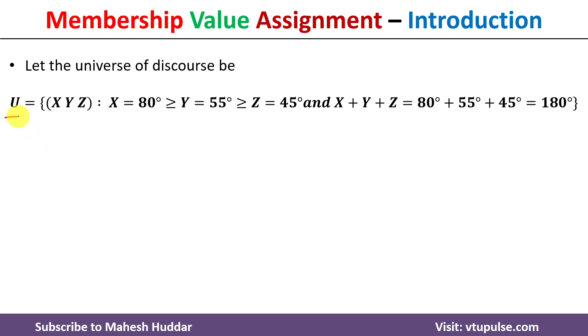The universe of discourse U contains three elements x, y, z, where x is equivalent to 80 degrees, which is greater than or equal to y, which is equivalent to 55 degrees, which is greater than or equal to z.